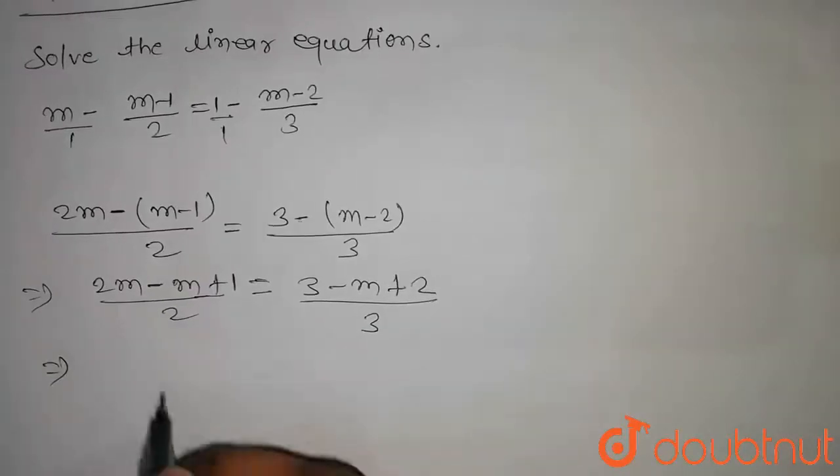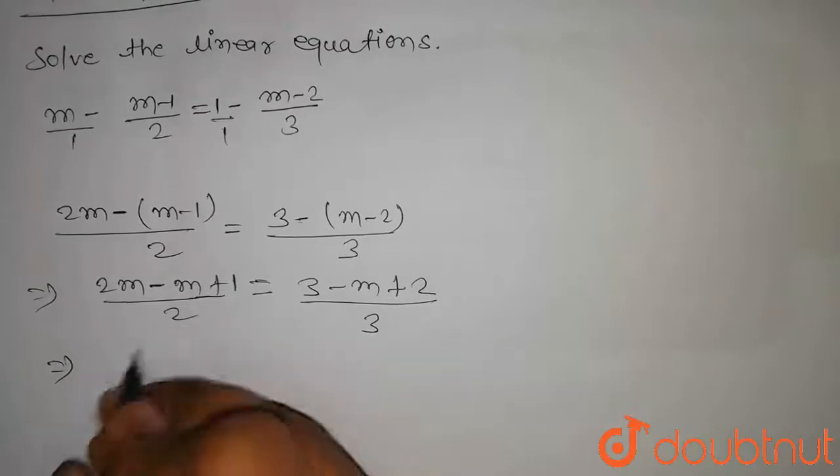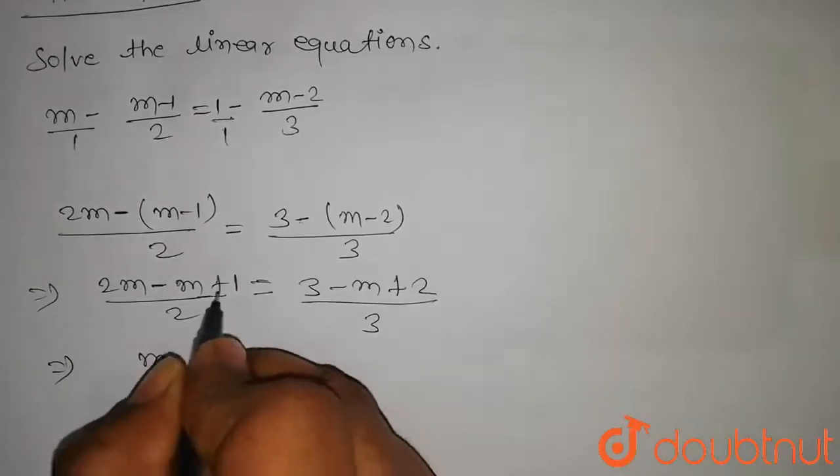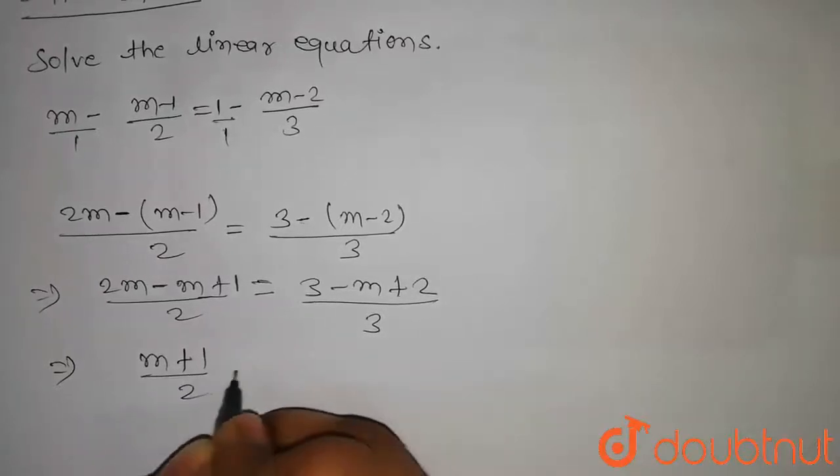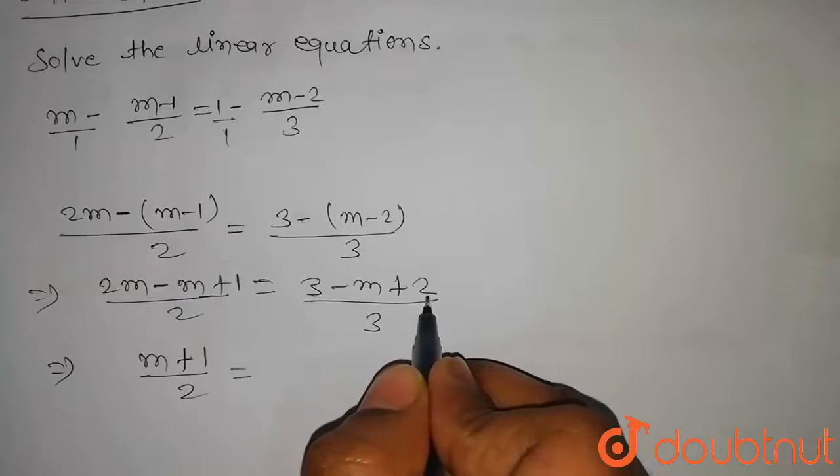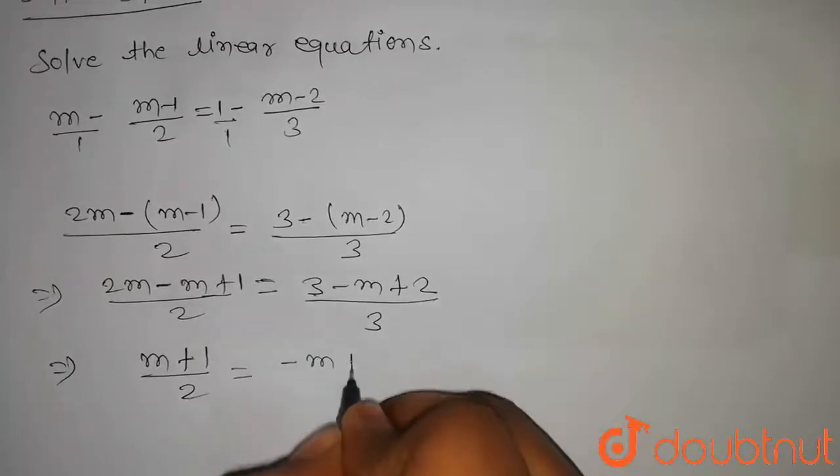So on further solving this we get 2m minus m will be equal to m, and this is plus 1 by 2, equal to 3 plus 2 will be equal to 5, that is minus m plus 5 by 3.